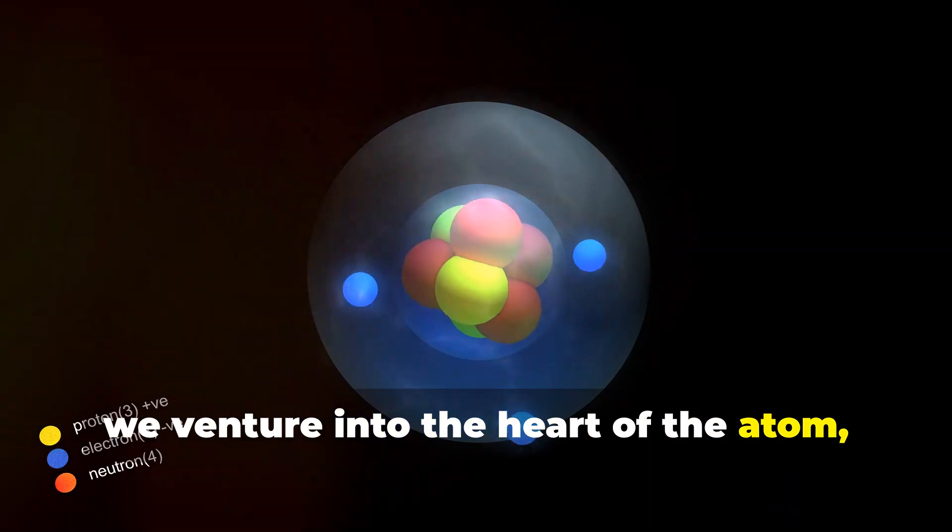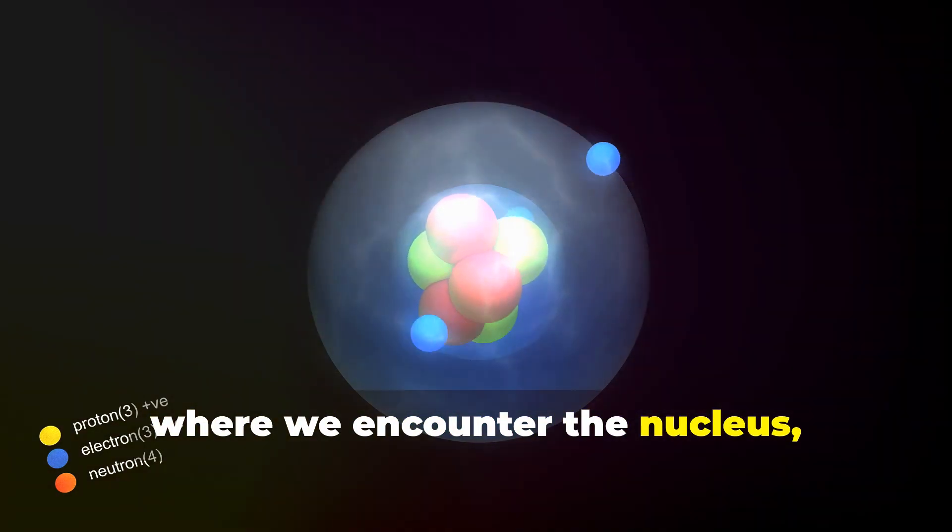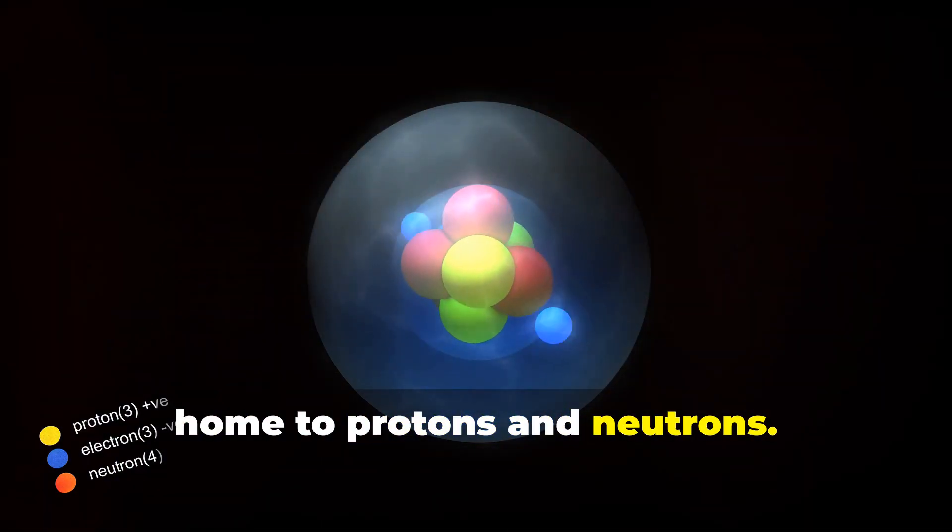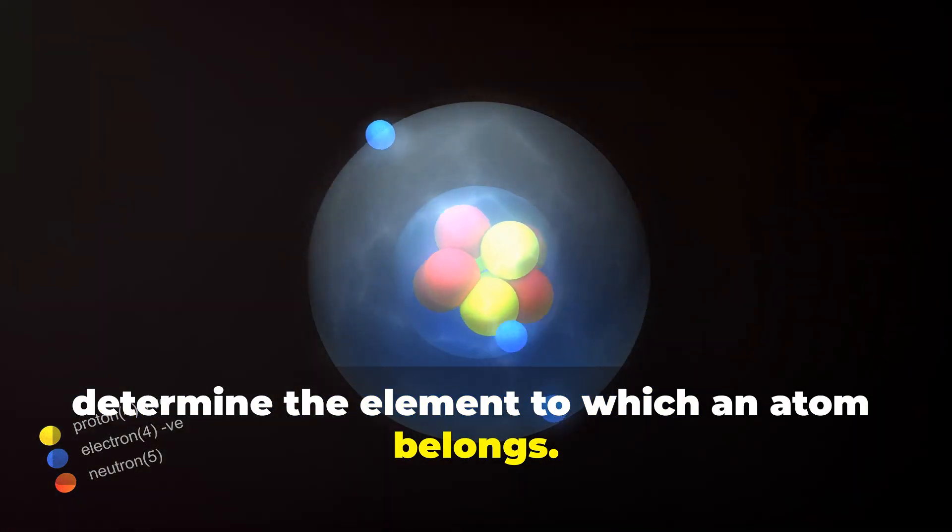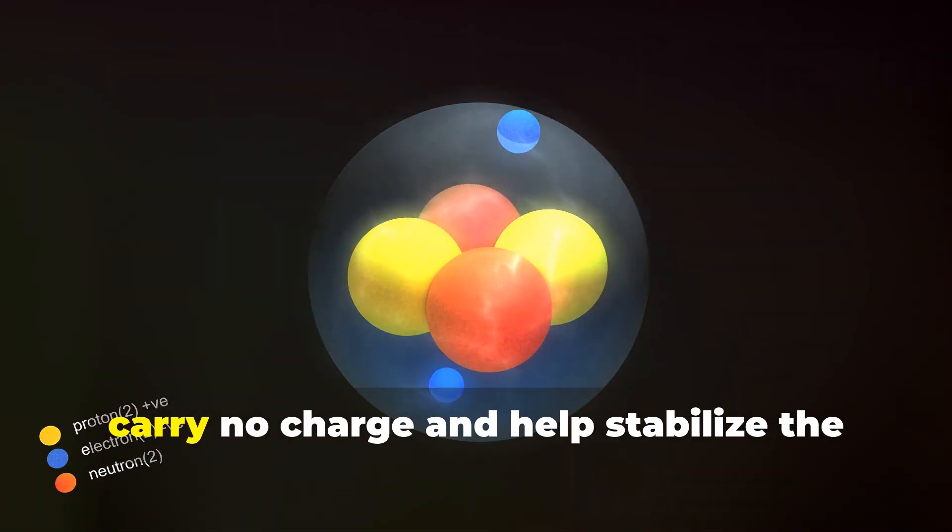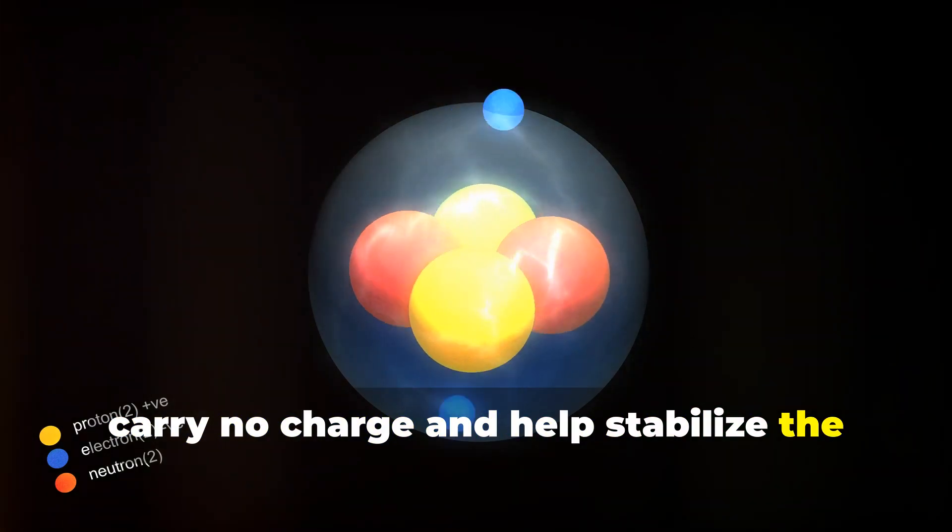Next, we venture into the heart of the atom, where we encounter the nucleus, home to protons and neutrons. Protons, positively charged particles, determine the element to which an atom belongs. Neutrons, on the other hand, carry no charge and help stabilize the atom's nucleus.